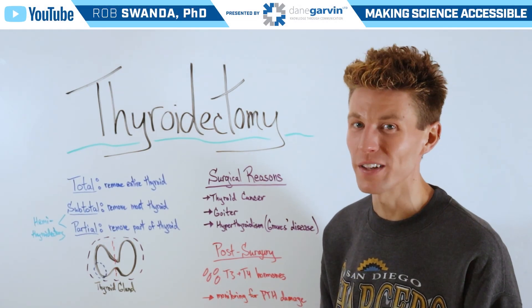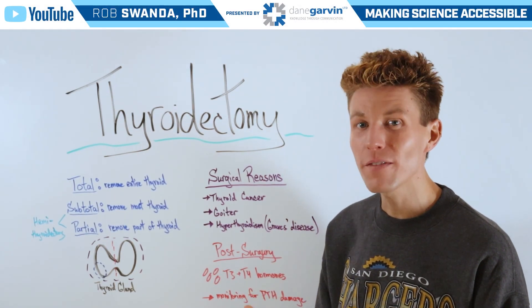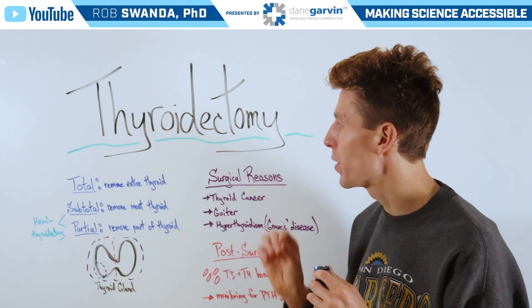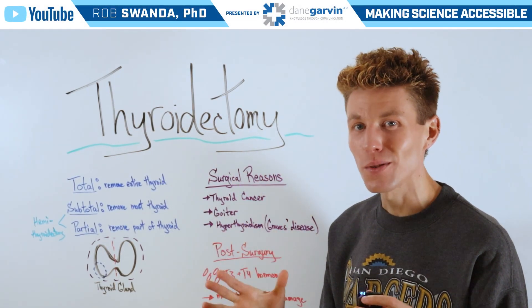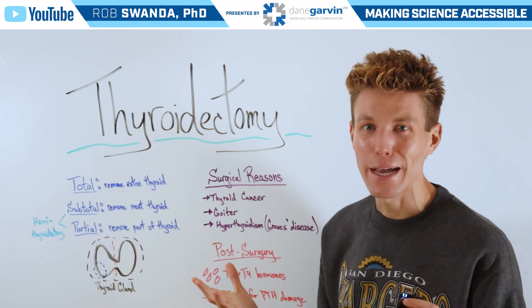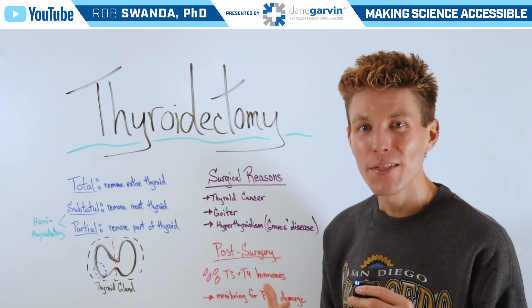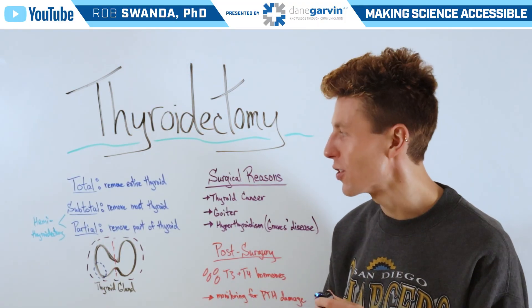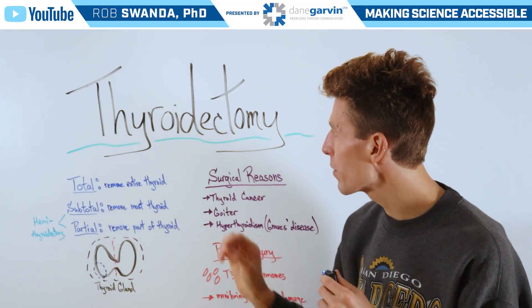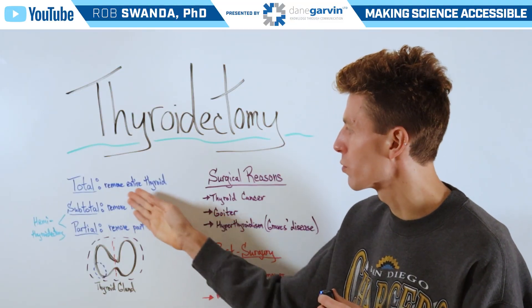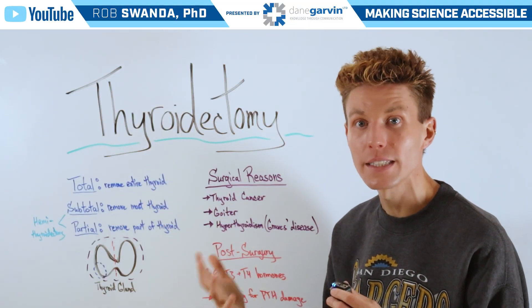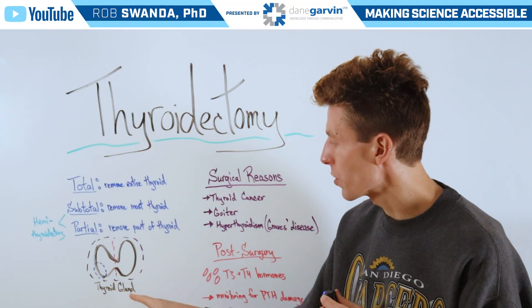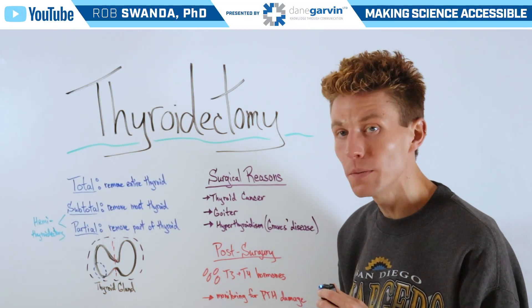In several of our thyroid videos, you may have heard the term known as thyroidectomy, so let's break down exactly what this means today. There can be a few different types, such as a total thyroidectomy, which is removal of the entire thyroid — think of that in this diagram circled here in purple.